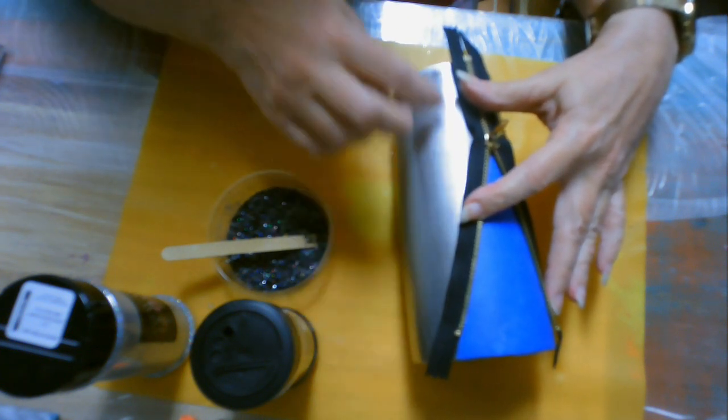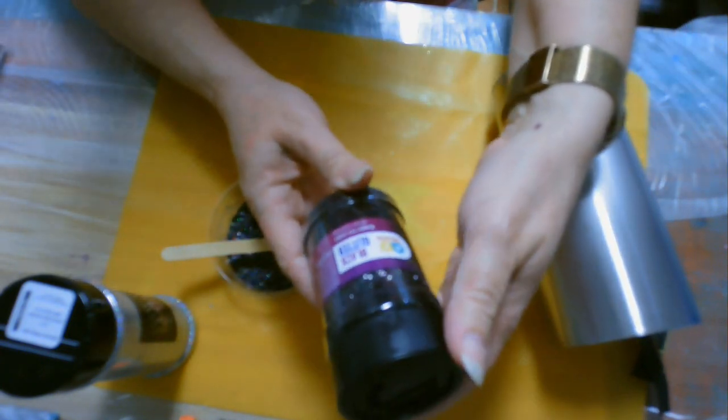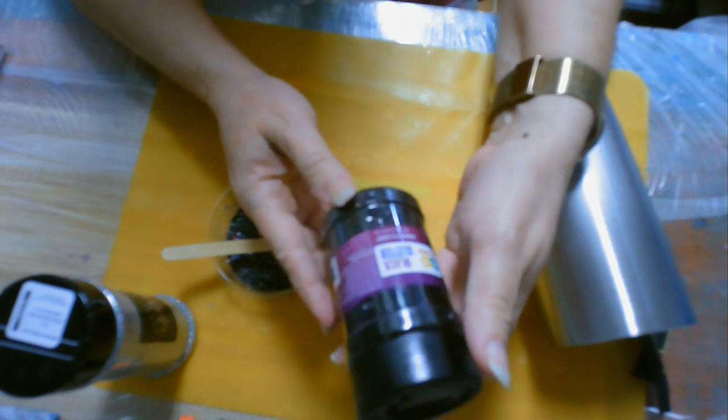I've already cleaned my cup, sanded it, and washed it with Dawn dish liquid. And I've got it taped off where I want the different colors.